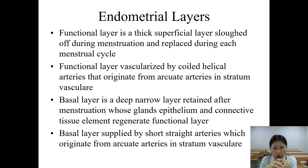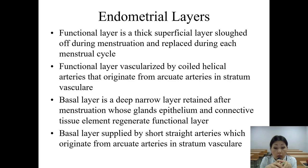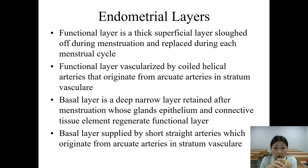The functional layer is the thick superficial layer sloughed off during menstruation and replaced during each menstrual cycle. It is vascularized by coiled helical arteries that originate from arcuate arteries in the stratum vasculare. The basal layer is a deep narrow layer retained after menstruation, whose glands, epithelium, and connective tissue elements regenerate the functional layer. The basal layer is supplied by short straight arteries originating from arcuate arteries in the stratum vasculare.